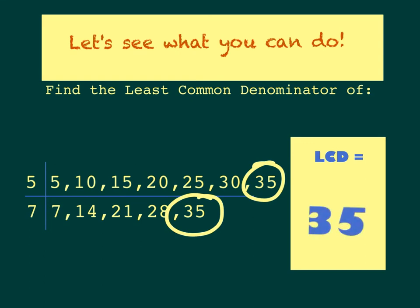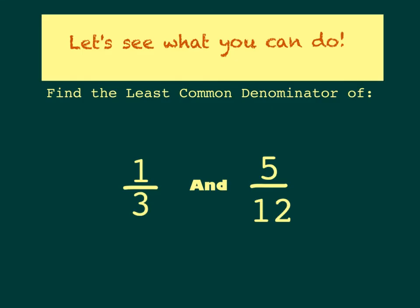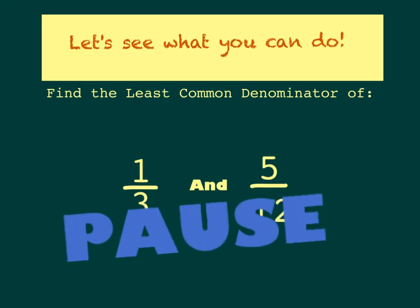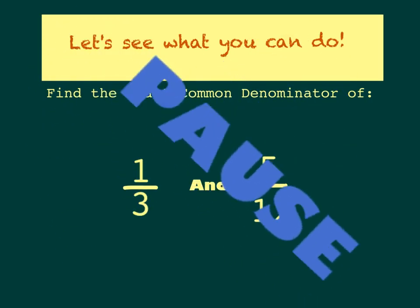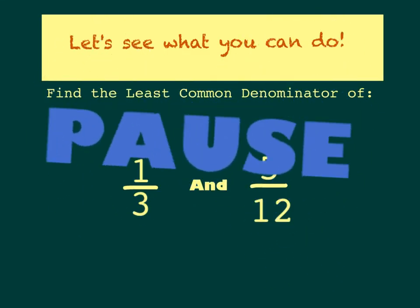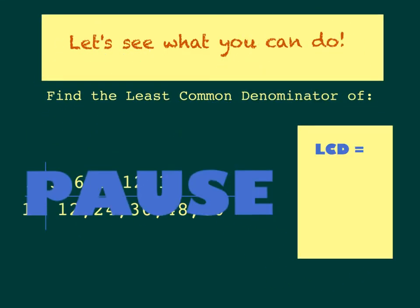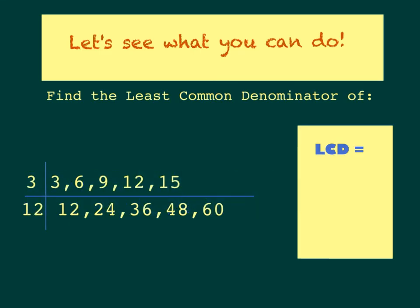How did you do? I think you can handle a couple more. Now let's find the least common denominator between the fractions 1 third and 5 twelfths. Pause the video while you do the math, and unpause when you're ready to see the answer. After identifying the first 5 multiples, the least common multiple is 12, giving a least common denominator of 12.